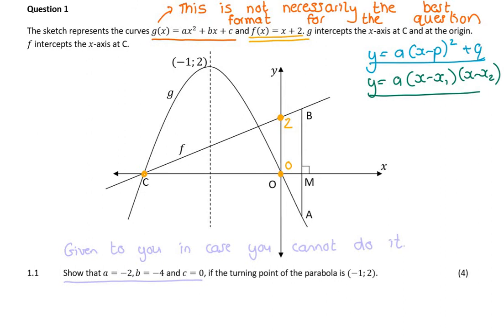So when they write the question that says show that a equals minus 2, b equals minus 4, and c equals 0, they're only giving it to you in case you can't do it. So you try your best in question 1.1, and then after that, you are allowed to assume those values.